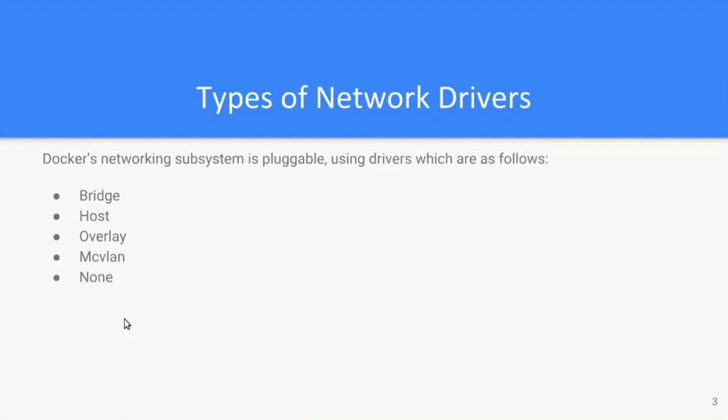Third is overlay. The overlay network driver is used in the context of Docker Swarm, where you want multiple Docker services to communicate with each other which are spread across multiple Docker nodes. Fourth is macvlan. The macvlan network driver is used when you want your Docker container to look like a separate VM or a physical host with a unique MAC address.